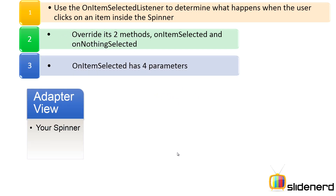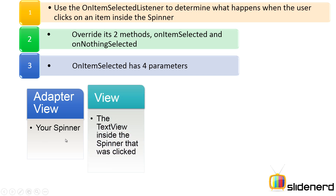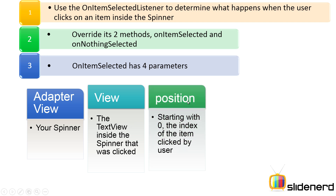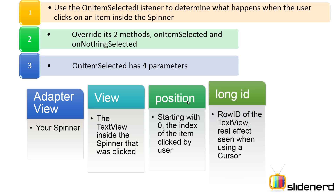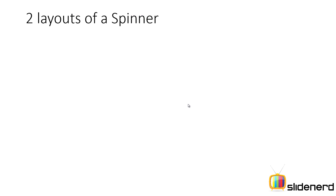Step 3: the onItemSelected is the main method. It has four parameters: one, the AdapterView which is your spinner; two, the View which is the TextView inside the spinner that was clicked; three, the position of the item inside the list — zero for the first, one for the second, two for the third, and so on; and four, the ID which matters only when using databases or content providers.